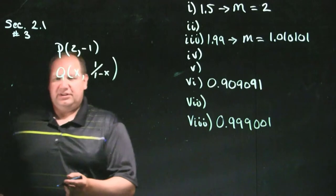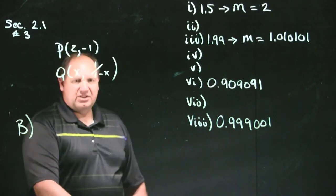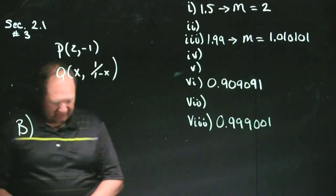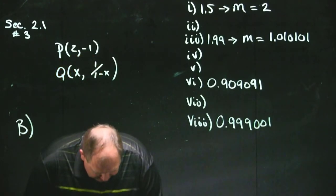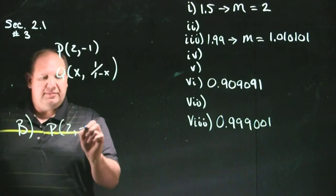So, the question in the book then asks us for part b, what is our guess of the slope of the secant line? It says, using the results of part a, guess the value of the slope of the secant line to the curve at this point, p2, negative 1.